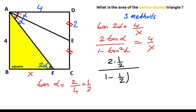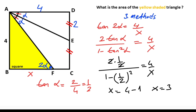Plugging in tangent alpha equals one half: 2 times (1/2) over (1 minus (1/2) squared) equals 4 over x. Simplifying: 1 over (3/4) equals 4/3, so x equals 4 minus 1 — wait, solving gives x equal to 3 units. Therefore the area of the yellow shaded triangle equals 6 square units.